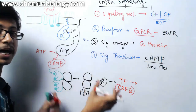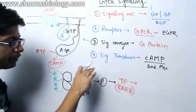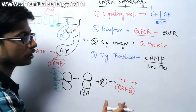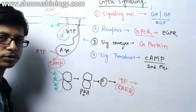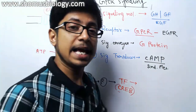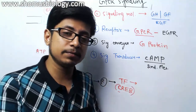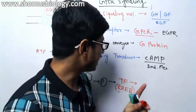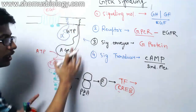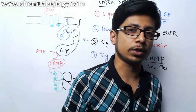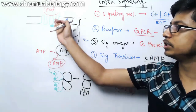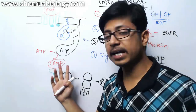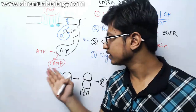CREB is a cyclic AMP response element binding factor. The response element is a part of the DNA present in the nucleus. Once CREB is active, it goes inside the nucleus and binds with the specific response element in the gene, allowing transcription of downstream proteins that promote cell growth. These proteins help the cell divide and pass from G1 to S to G2 and through the M phase of the cell cycle — that is the idea of the growth factor-mediated GPCR signaling.